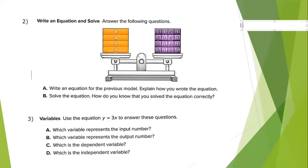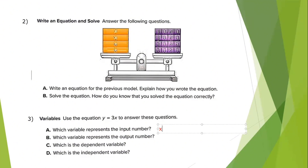Number 3: Use the equation y equals 3x to answer these questions. Which variable represents the input number? The variables are y and x. The x is the input. When I put the value of x, I get the value of y. So x is the input variable. The output variable is y — it's the value I get out, so y is the output.